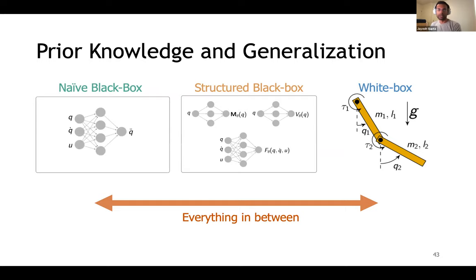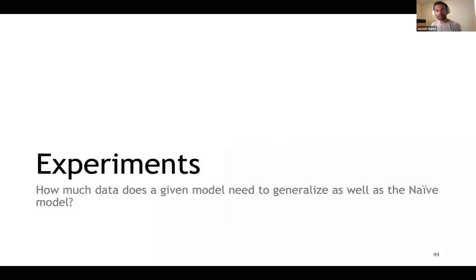One of the goals of this project was to understand the role of prior knowledge in generalization. Compared to the black box neural network approach on the left and the white box system modeling on the right, we propose a general structured black box approach. Moreover, there are many ways to interpolate between these approaches.